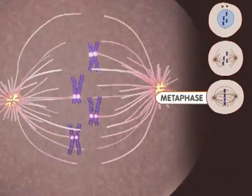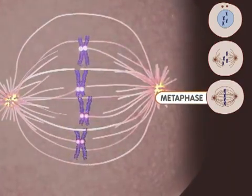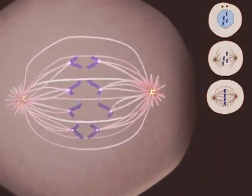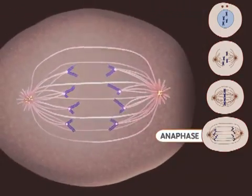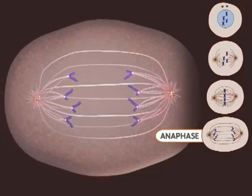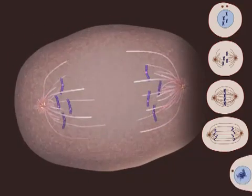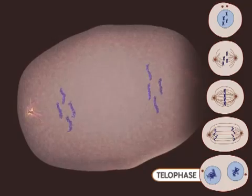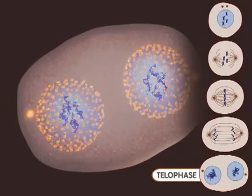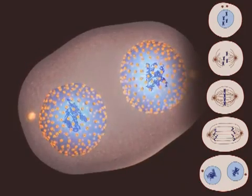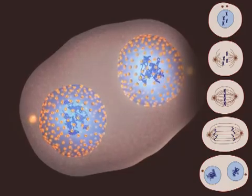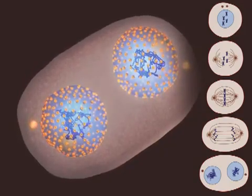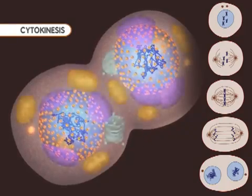Metaphase occurs when the chromosomes are aligned at the center of the cell. During anaphase, the chromosomes are moving apart. The telophase stage is marked by the appearance of new nuclear membranes. This is the end of mitosis. Finally, the splitting of the cell occurs during cytokinesis.